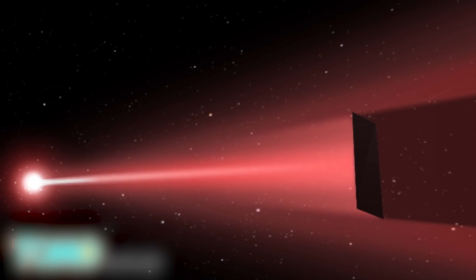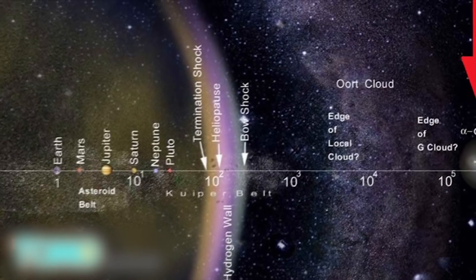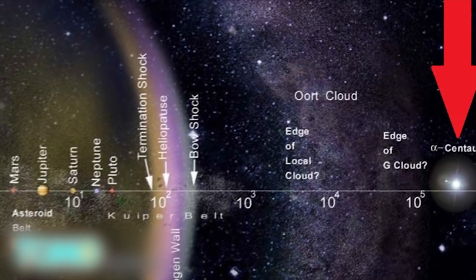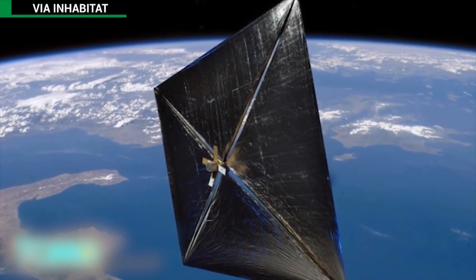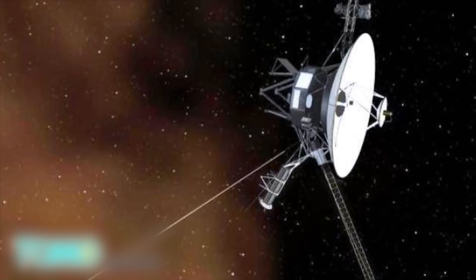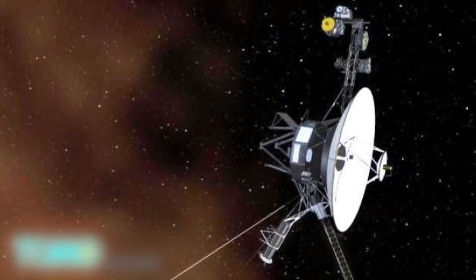Using photonic propulsion, interstellar travel may be possible, and we could get a probe to Earth's nearest star, Alpha Centauri, in as little as 15 years. In comparison, our current technology takes four to eight months to get to Mars. It took 37 years for the Voyager 1 spacecraft to reach the edge of our solar system.